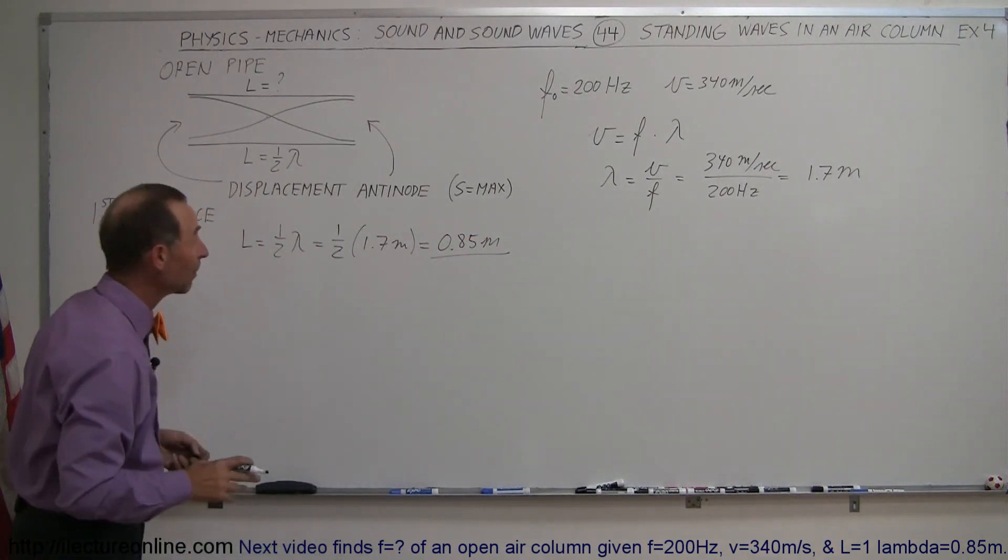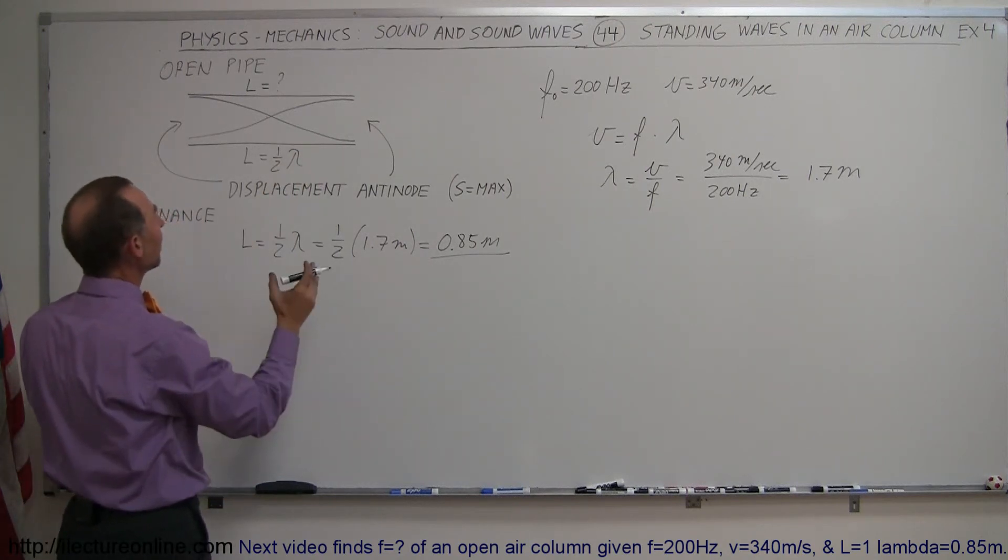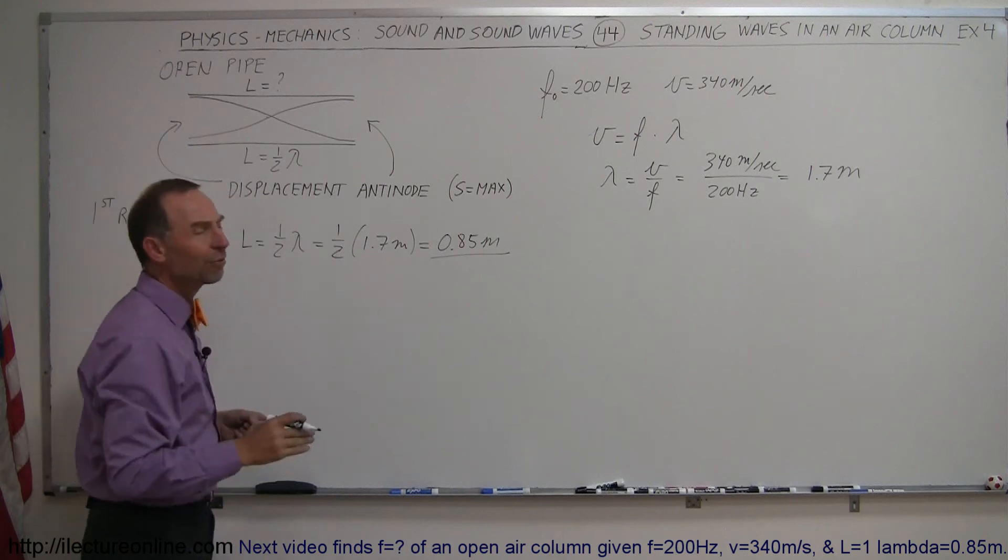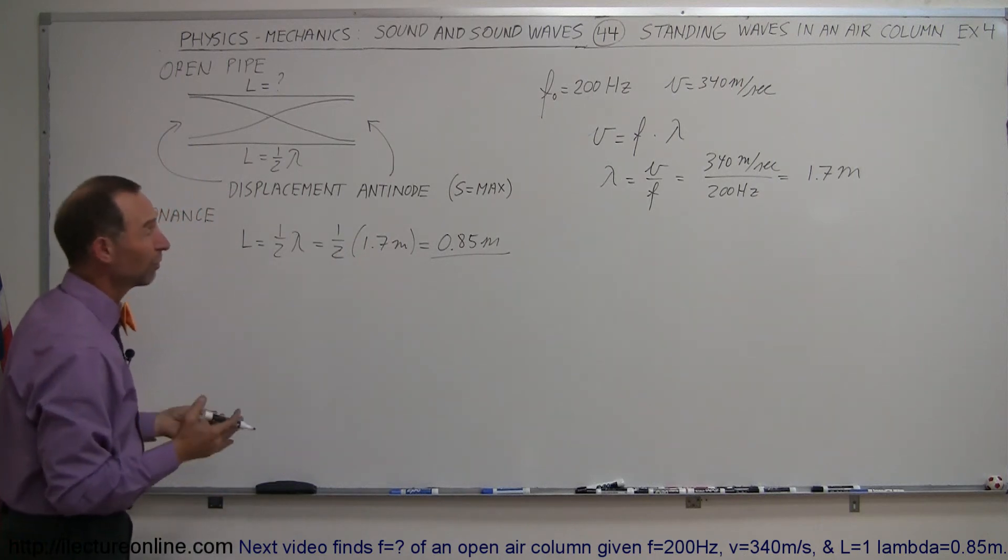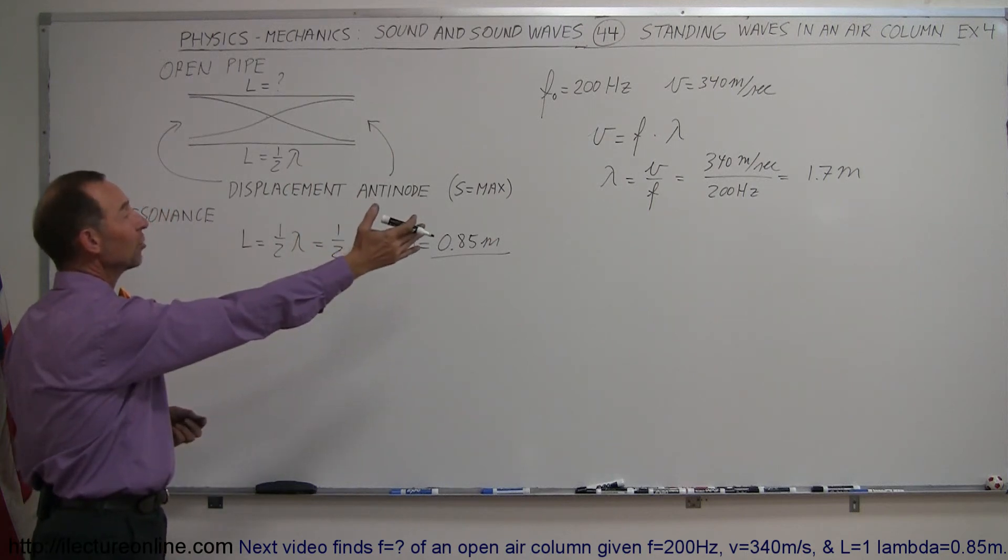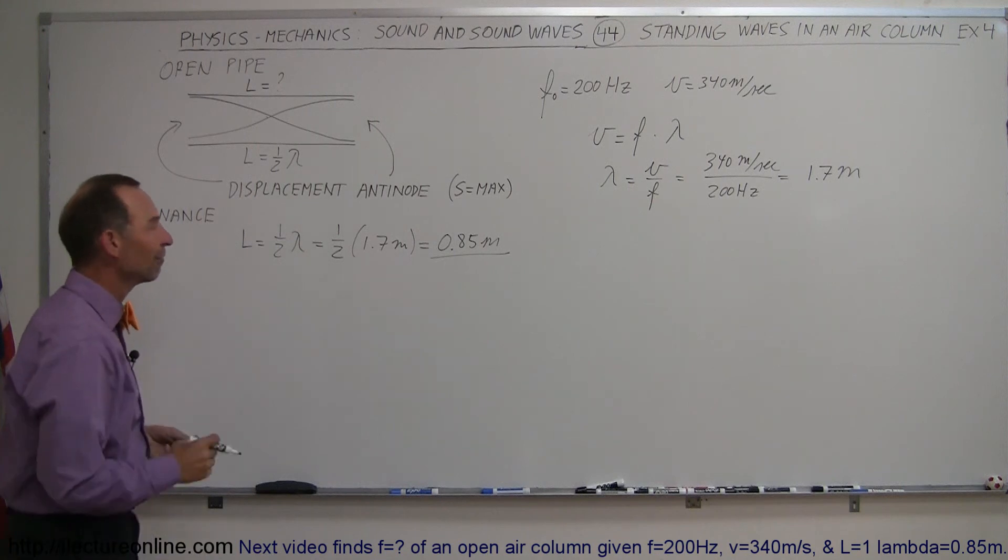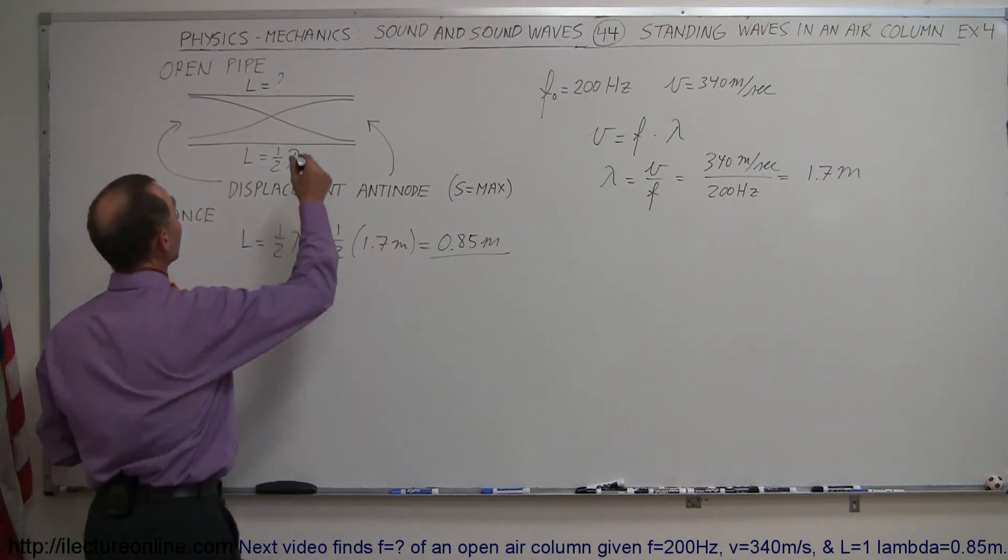That's the correct answer for the length of the pipe. So to have a first resonance situation in an open-end pipe with a sound wave of frequency 200 Hz, when the velocity of sound is 340 meters per second, we have a wavelength of 1.7 meters, such that half a wavelength is the length of the pipe, which is 0.85 meters.